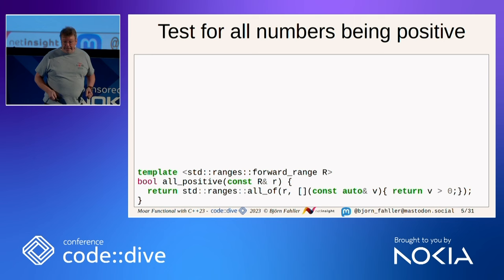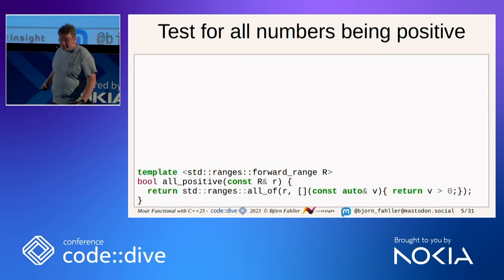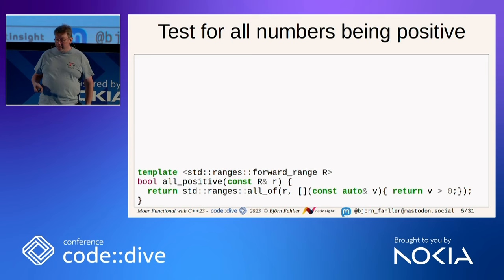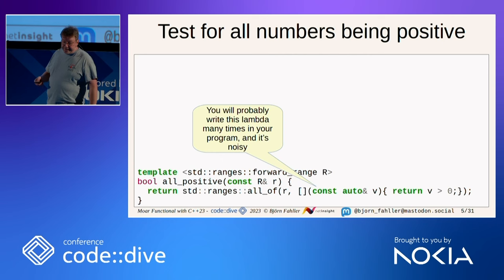Let's start with a simple example using ranges. We want to check if all values in a range are positive. So: `std::ranges::all_of(r, [](auto v){ return v > 0; })`. It's fine — I've written code like this many times, and I presume you have written similar code several times. But it's noisy, I think.